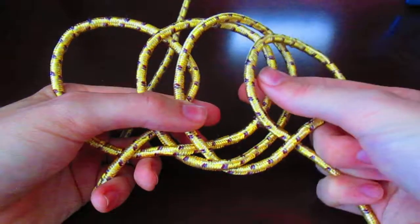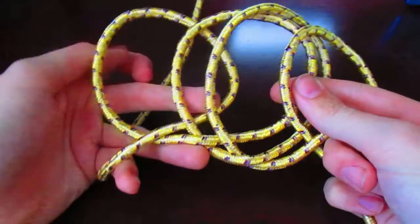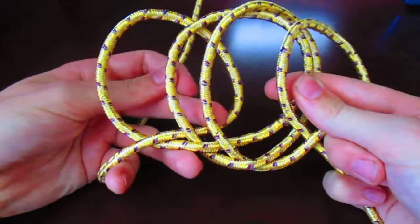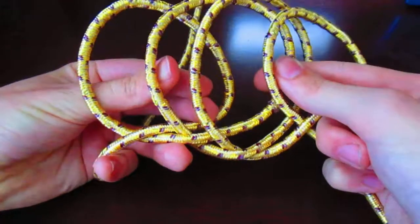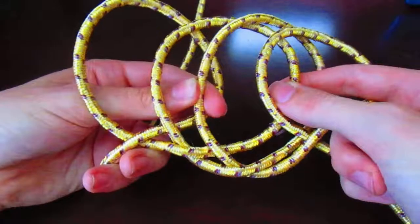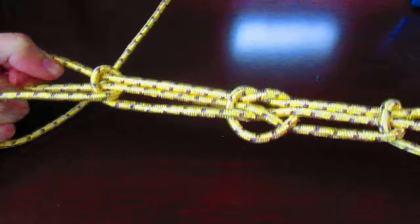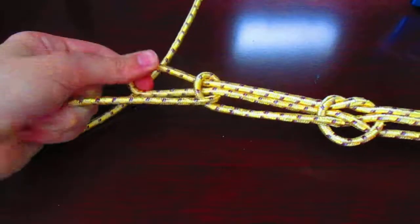I'm holding the working end like so. Then I'm going to go in from behind, reach through the first one, reach through the second one, and touch the left side of the third one. Hold that there, then just pull, and there you go - the sheepshank with the square knot in the middle.